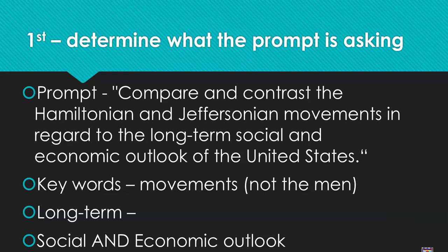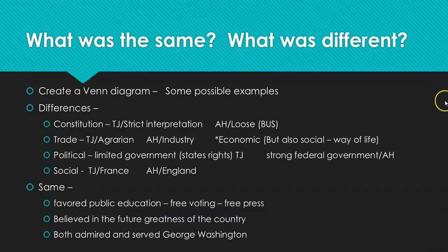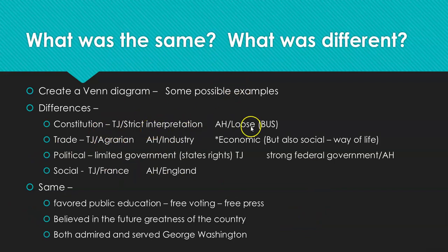So this is kind of a complicated question. Let's look and see what's the best way to do something like this. If you're comparing and contrasting, you're all familiar with Venn diagrams. What's the same? What's different? You're not saying Hamilton was born in Nevis and Jefferson was born in Virginia — you're looking at their particular movements and what they believed in. With the Constitution, Thomas Jefferson's strict interpretation versus Alexander Hamilton's loose interpretation.